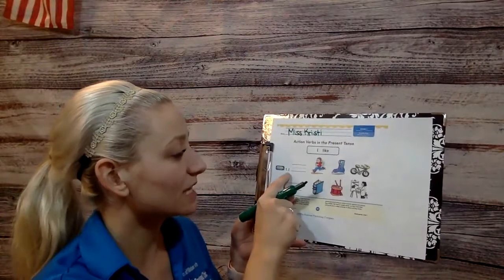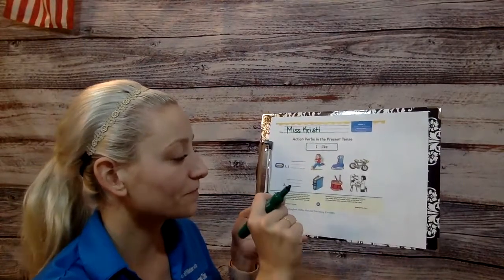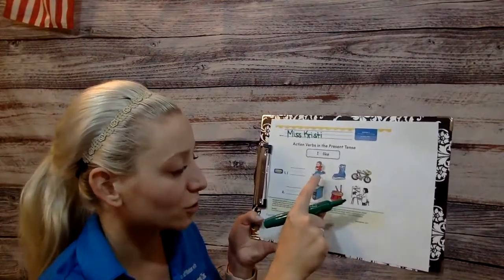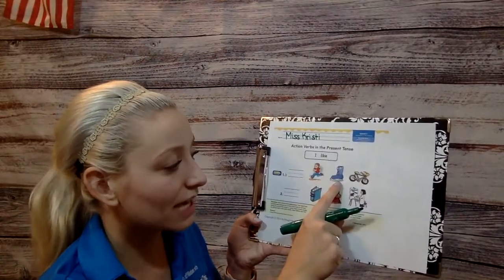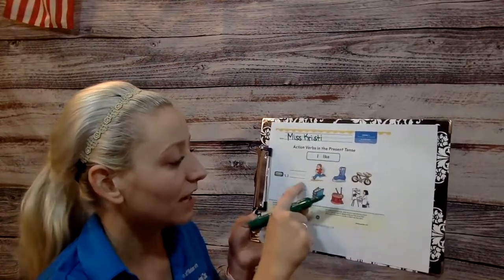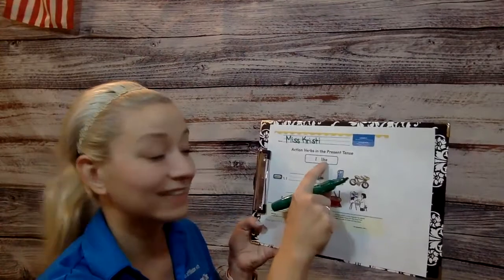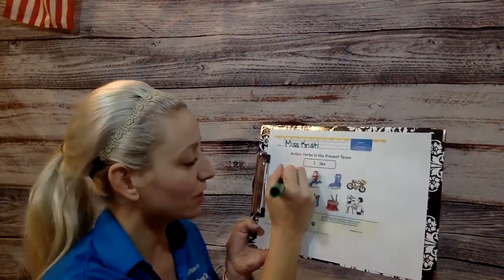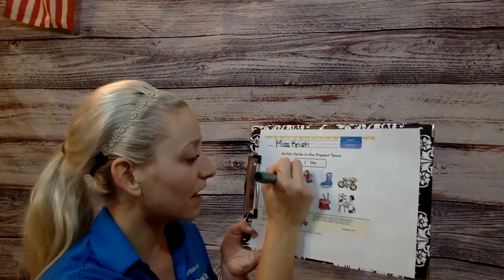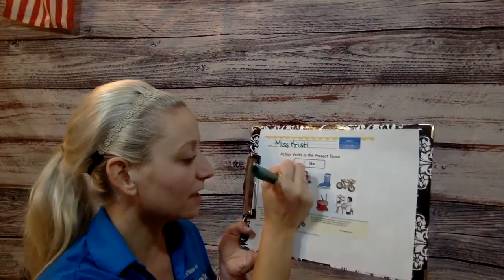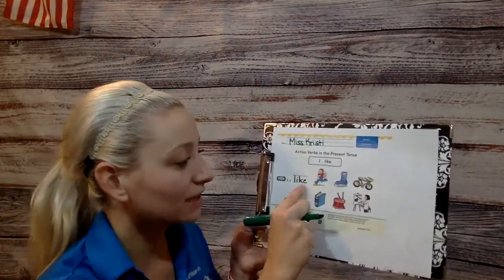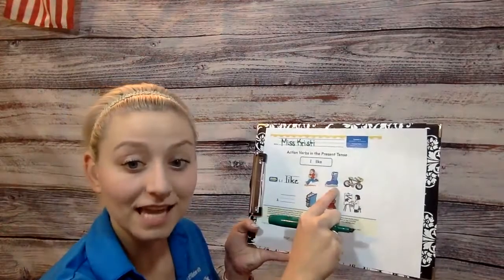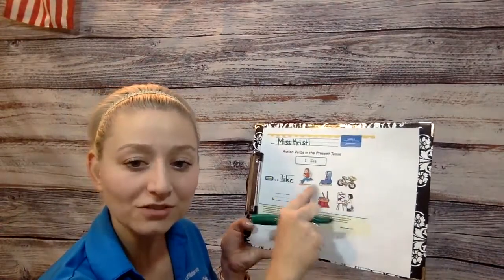So this one says I blank. And then we've got run, skate, bike. I think we should put the word like there. So let's put I like, L-I-K-E. I like running, skating, or biking.